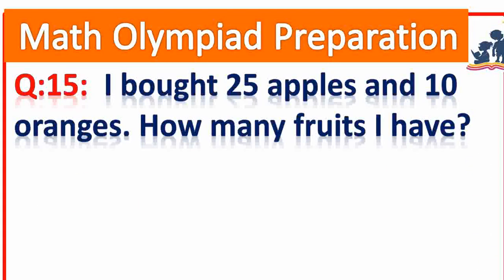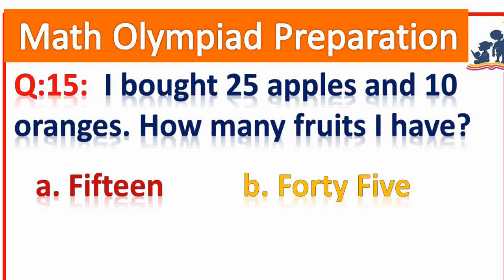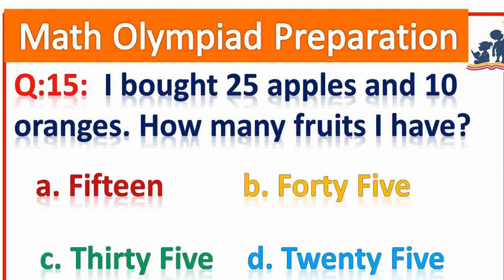Question number 15. I bought 25 apples and 10 oranges. How many fruits do I have? 25 plus 10 is equal to 35. Very good.